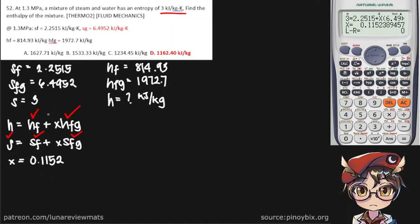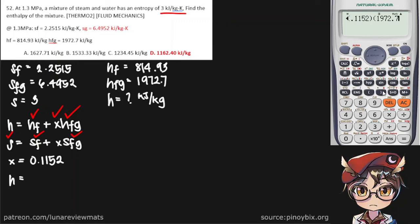That gives us enough information to find our enthalpy. Putting this straight into the calculator: Hf is 814.93, our steam quality is 0.1152, and our Hfg is 1972.7. We get a final answer of 1042.19 kilojoules per kilogram. The closest answer is D, therefore that is our final answer.